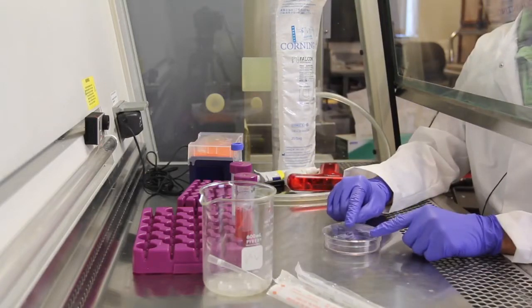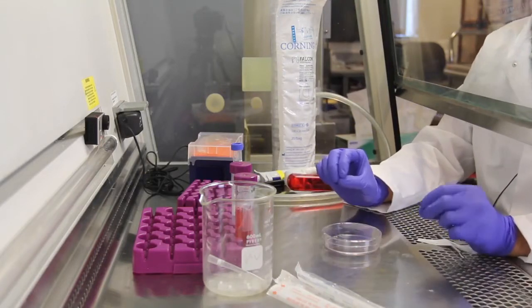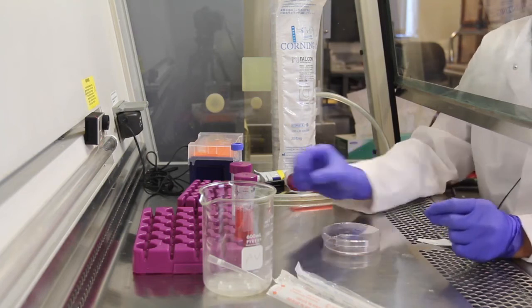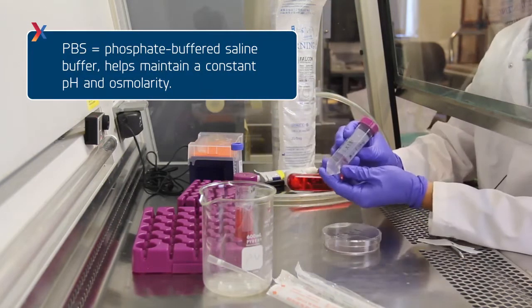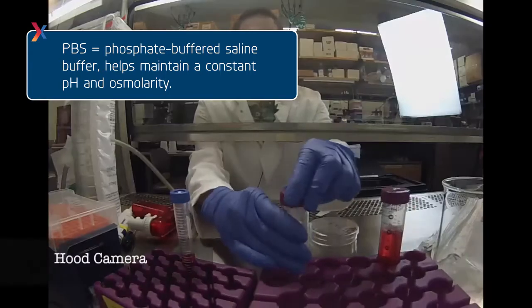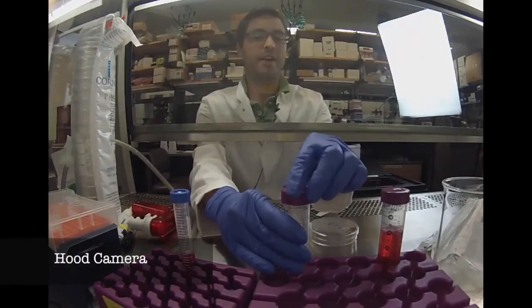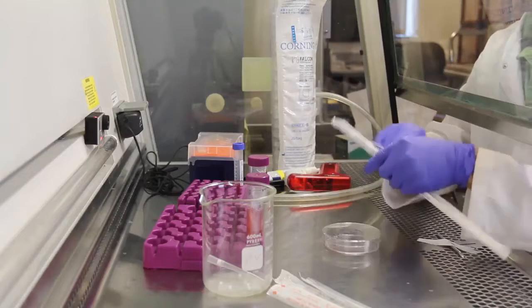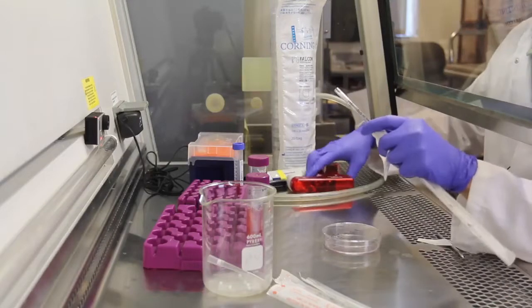Next step is to wash these cells to make sure any remaining dead cells are gone and any other sort of contaminants are gone. I do this using 1x PBS. Before using any tubes, I like to pre-loosen the lid because when I'm working on it with one hand, it'll make my life a lot easier.